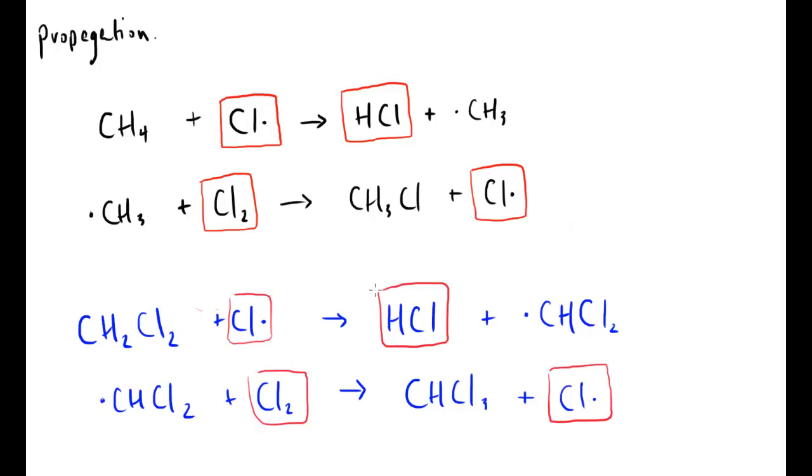The final step of course then is the termination step. So termination. No matter what happens here, the termination step involves two radicals coming together to form a non-radical. So the first example could be, we could have two chlorines coming together. Two chlorine radicals coming together to form chlorine. That would be an example of a termination step.